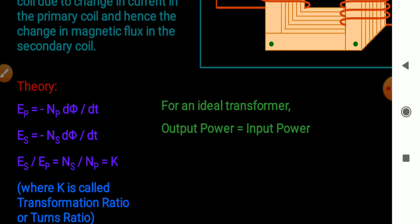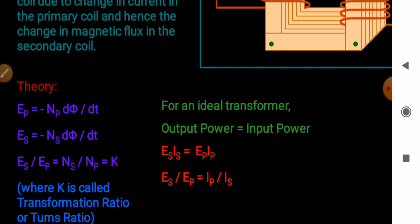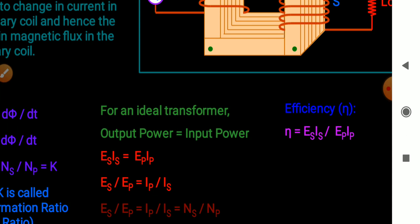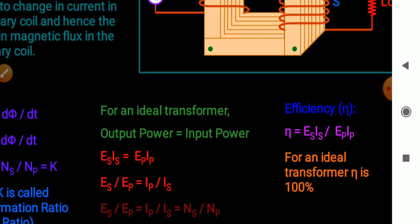For an ideal transformer, there is no loss of energy, so output power equals input power: Es × Is = Ep × Ip, which gives Es/Ep = Ip/Is. We can write: Es/Ep = Ip/Is = Ns/Np. The efficiency of a transformer is given by output power divided by input power — that is, (Es × Is)/(Ep × Ip). For an ideal transformer, efficiency is 100 percent.